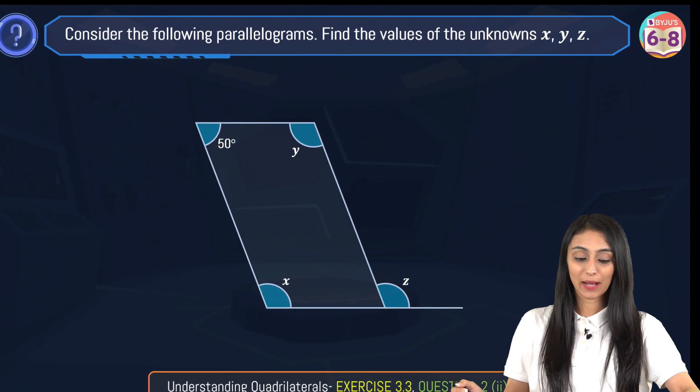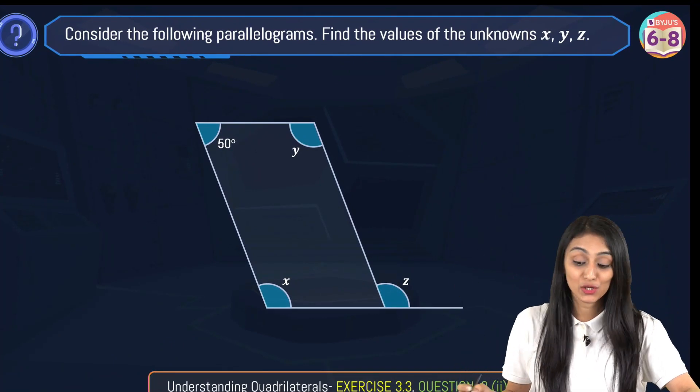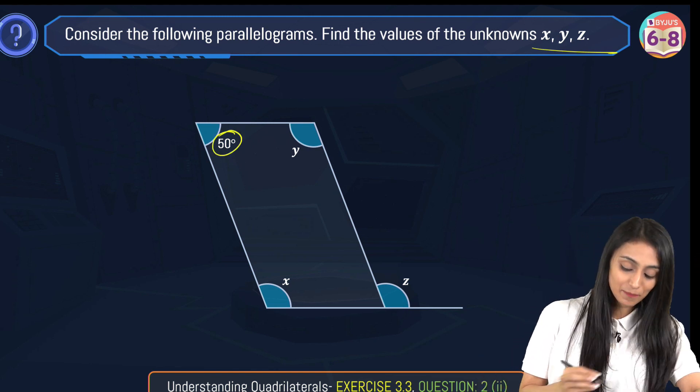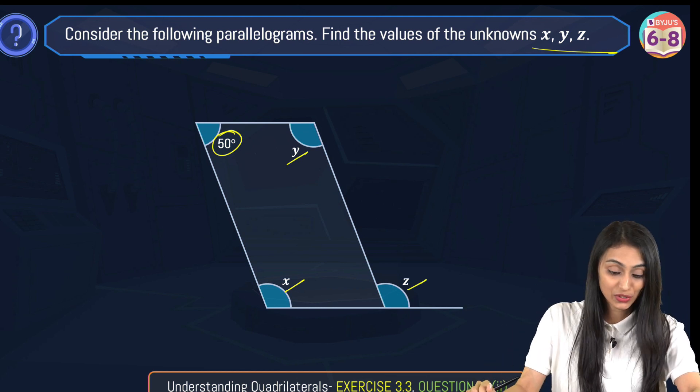Consider the following parallelogram. So here we have a parallelogram. We have to find out the value of the unknowns x, y and z. We can see that this angle is 50 degrees. Here this is x, this is y and this is z. So we have to find out the value of these variables.